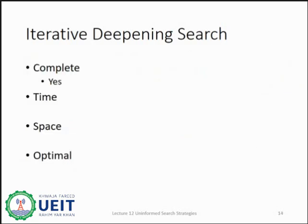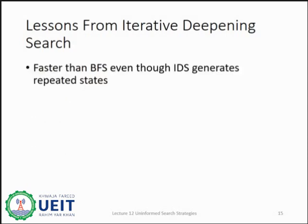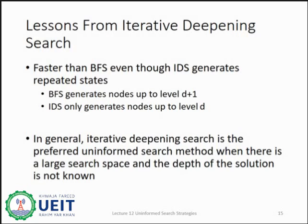This algorithm is complete if the branching factor is finite. Let's suppose b is the branching factor and d is the depth; then the worst case time complexity is O(b^d), and for space we have b times d. It is optimal if all the step costs are equal. The main drawback of iterative deepening depth first search is that it repeats all the work of previous phases. In general, iterative deepening search is the preferred uninformed search method when there is a large search space and the depth of the solution is not known.